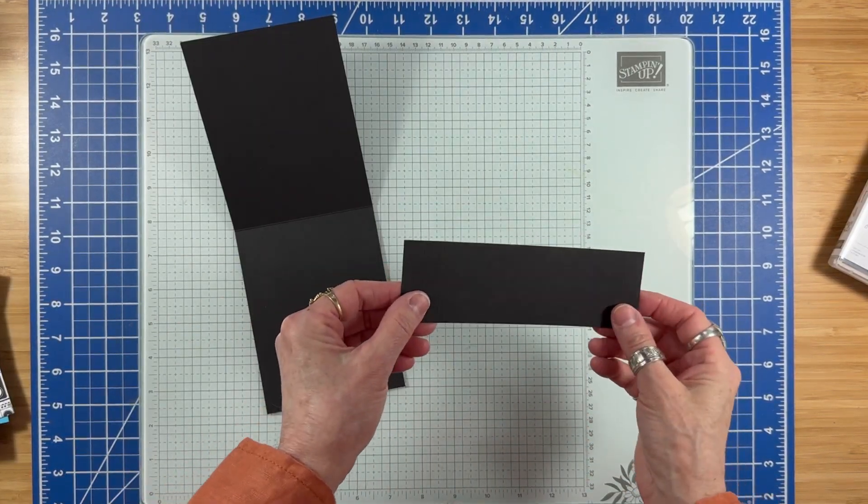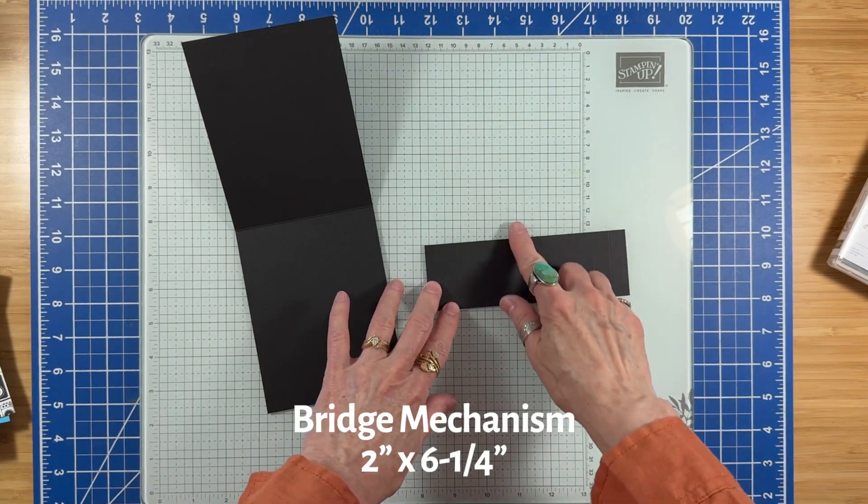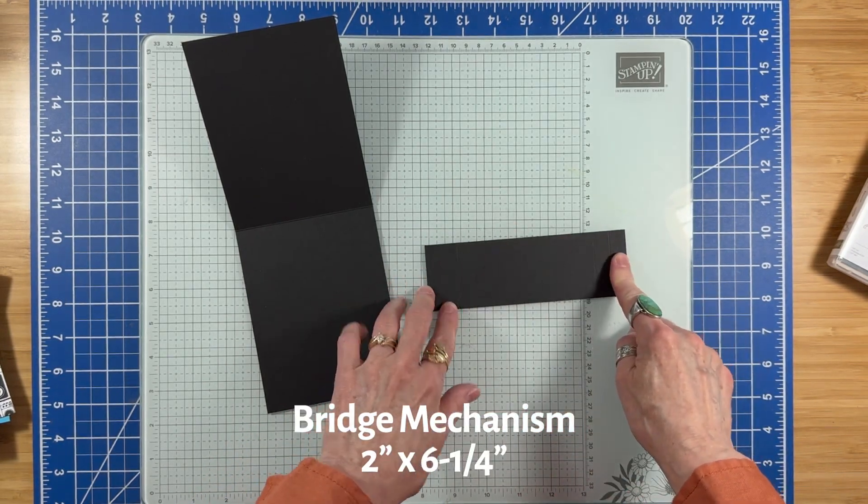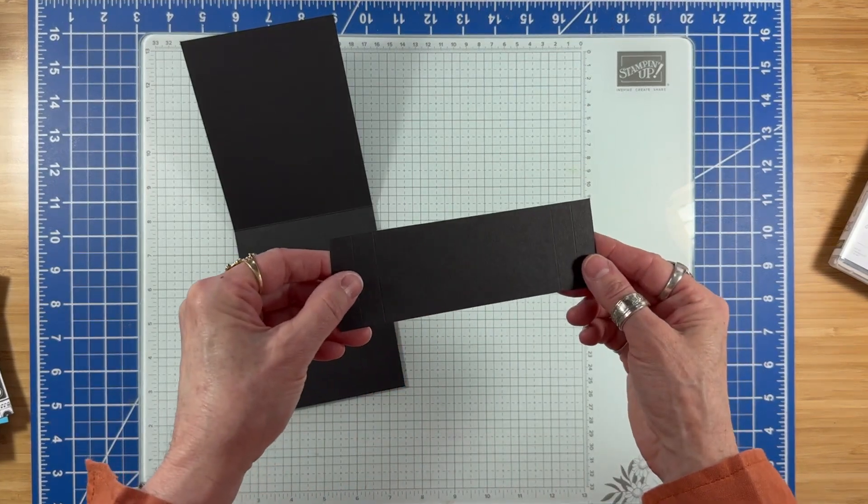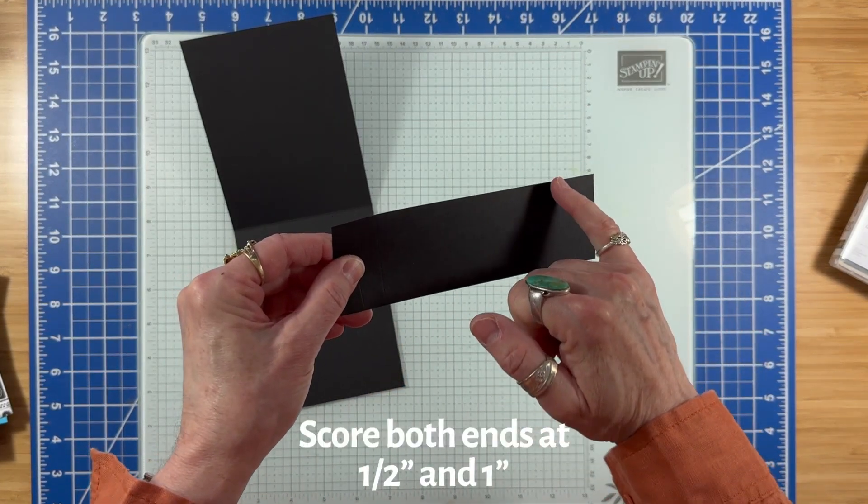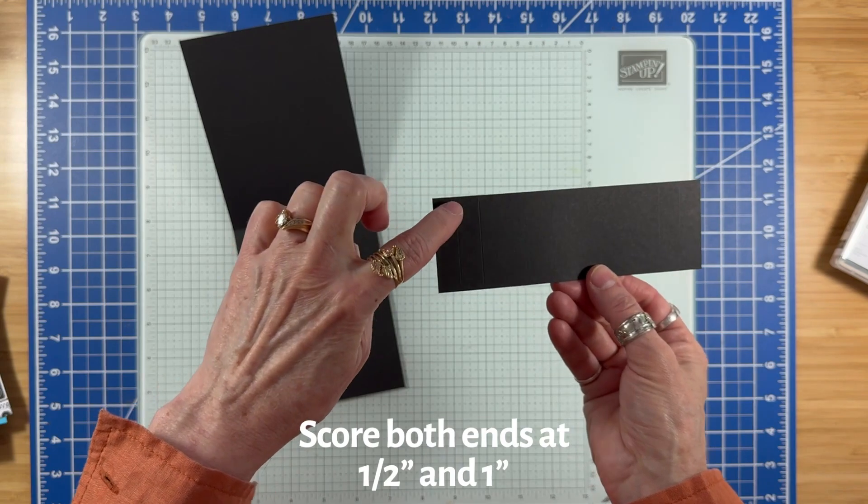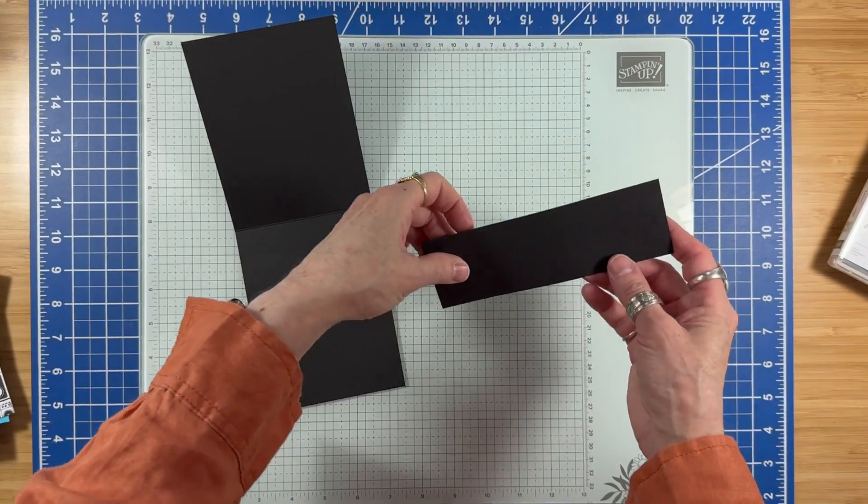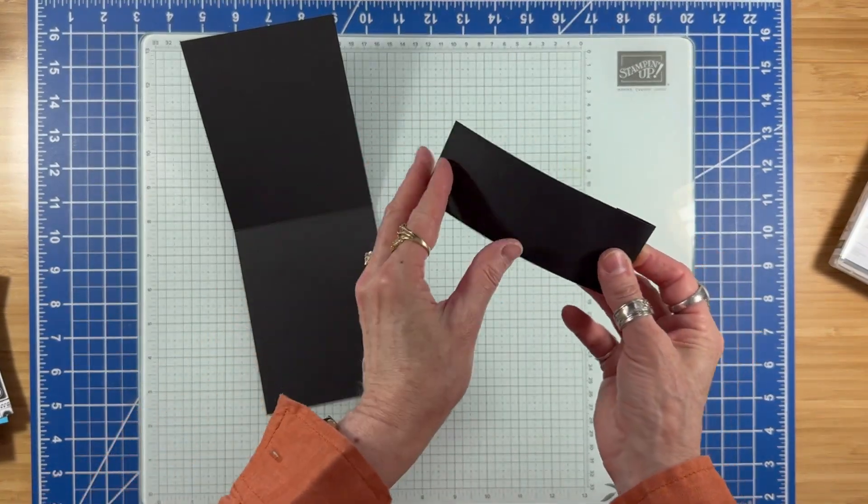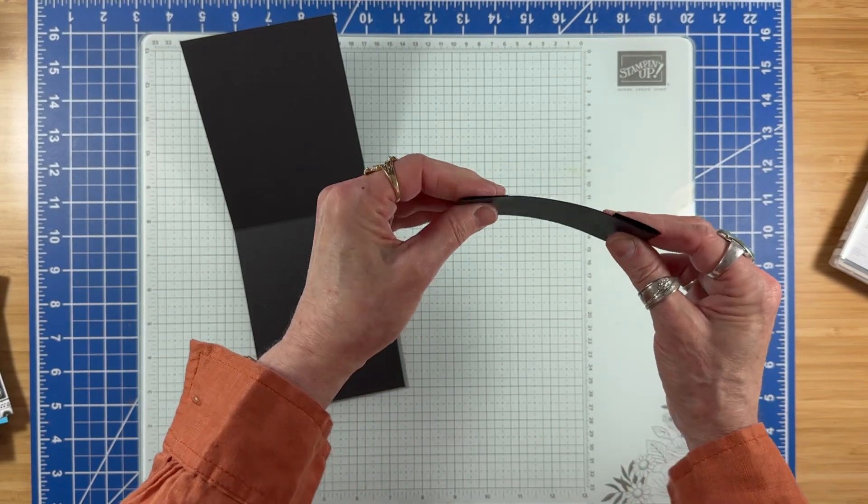The bridge mechanism is a piece of basic black measuring 2 inches by 6.25 inches, and both ends are scored at half an inch and one inch.